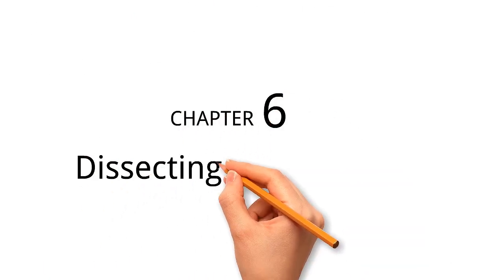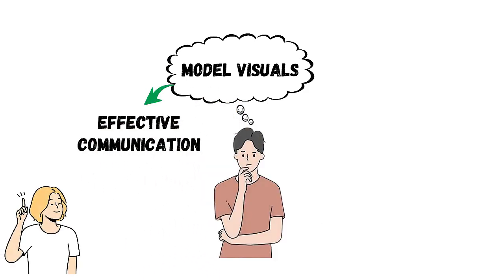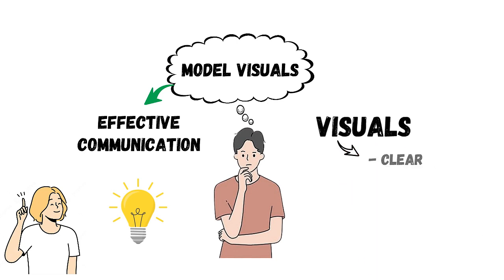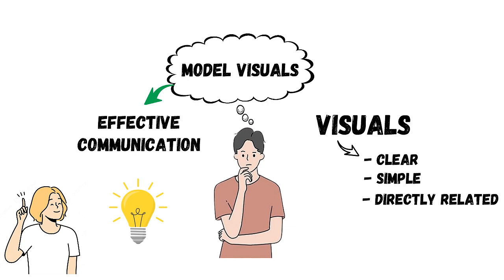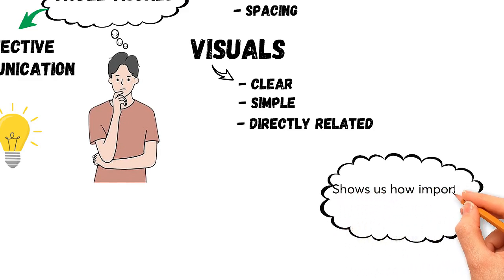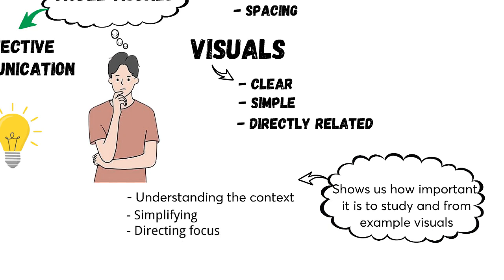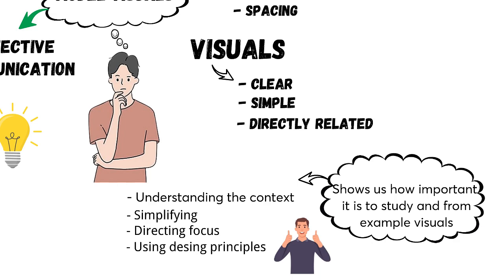Chapter 6 is titled Dissecting Model Visuals. In this chapter, we learn how to understand and analyze model visuals. These examples of good data visualizations teach us important lessons about effective communication. By seeing what makes these visuals successful, we can use the same ideas in our data presentations. Visuals should be clear, simple, and directly related to the main message. Apply basic design rules like alignment, contrast, and spacing to make them effective. By understanding the context, simplifying, directing focus, and using design principles, we can create strong data visuals that clearly and effectively communicate our message.